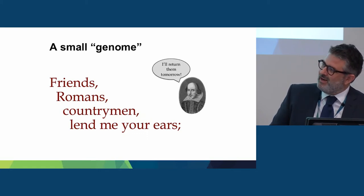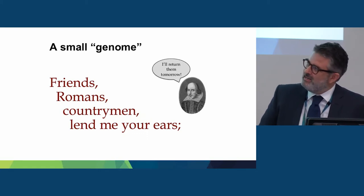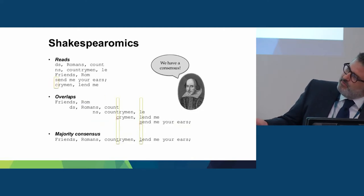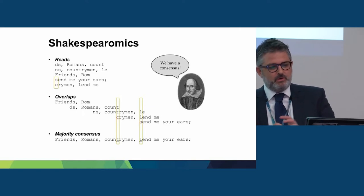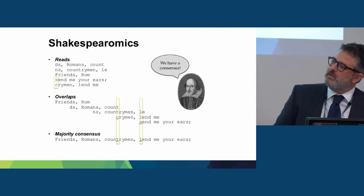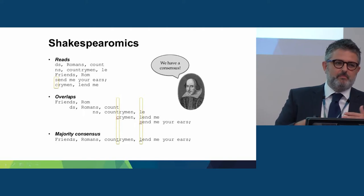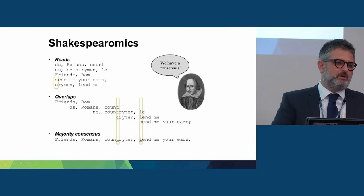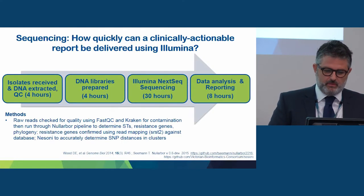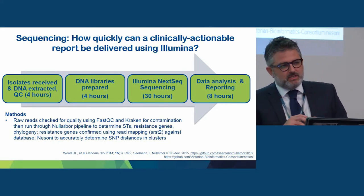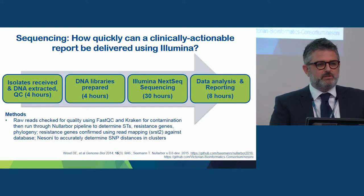A simple way to think about it: imagine this is a very small genome — Shakespeare-omics. If you chopped up that genome into tiny little fragments as Illumina does, each fragment doesn't necessarily make a lot of sense. But using sophisticated algorithms, you can piece those together, align them, and make a longer contiguous consensus sequence that makes sense. That's how you basically reconstruct your genome — that's how short-read sequencing works. Illumina is at the moment the market leader, used widely in human genomics and increasingly for bacterial genomics.